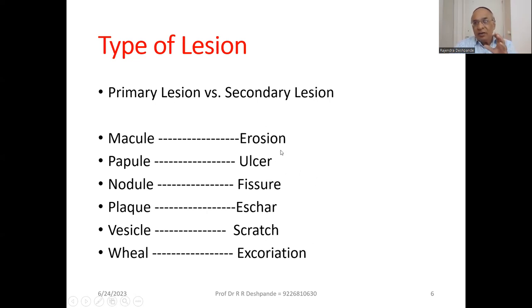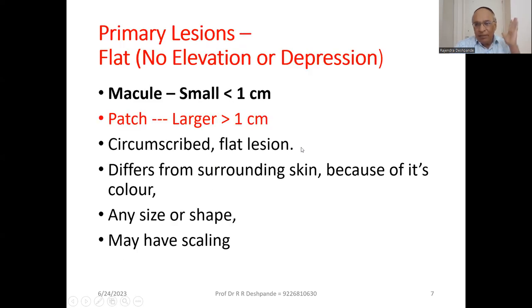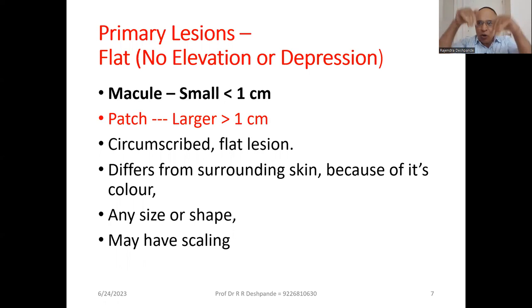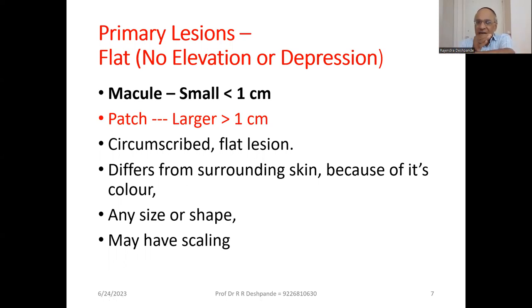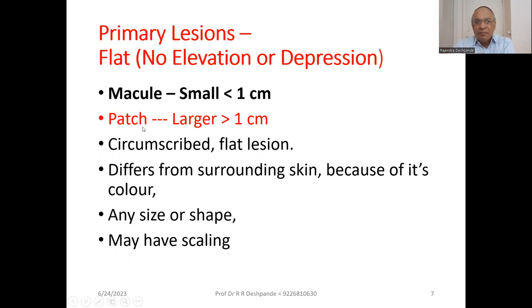Now, primary lesions. The first level is flat — at the level of the skin. A flat lesion has no elevation or no depression; it is not up, not down, it is at the level of skin. That is called a macule when it is less than one centimeter. When it is larger than one centimeter, that flat surface is called a patch. So there is a difference between macule and patch — a circumscribed, flat lesion that differs from the surrounding skin.